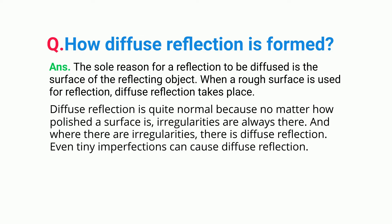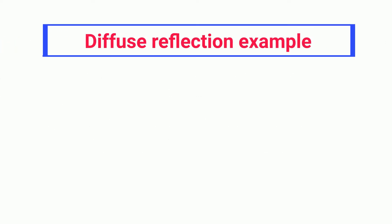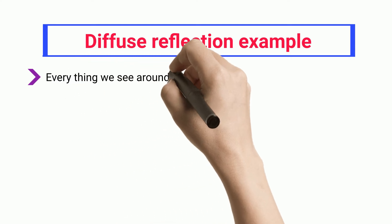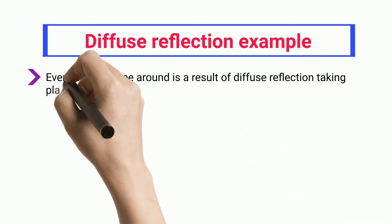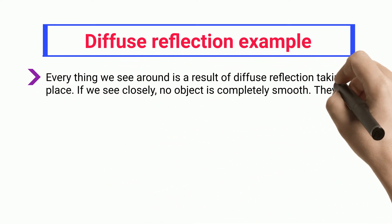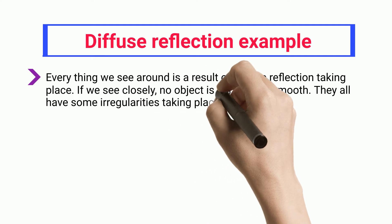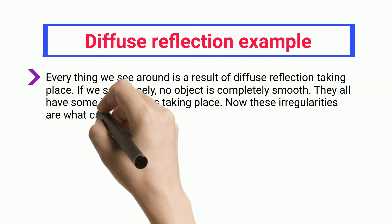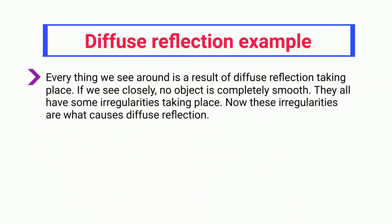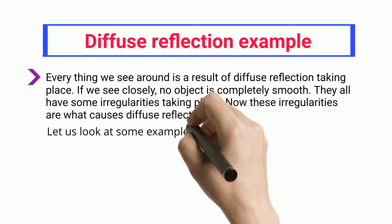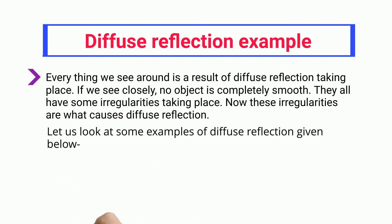Even tiny imperfections can cause diffuse reflection. Diffuse reflection examples: everything we see around us is a result of diffuse reflection taking place. If we look closely, no object is completely smooth — they all have some irregularities. These irregularities are what causes diffuse reflection. Let us look at some examples of diffuse reflection given below.